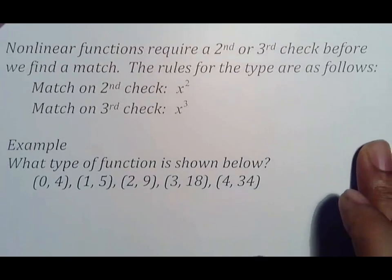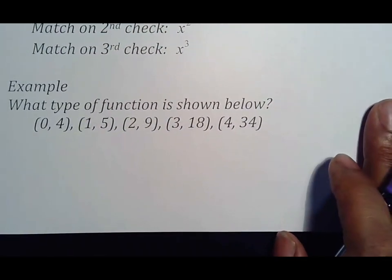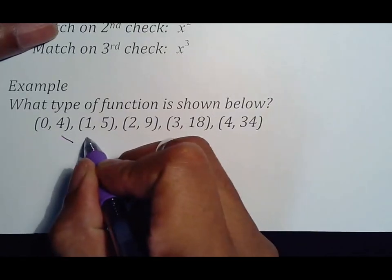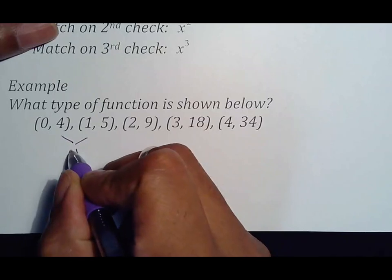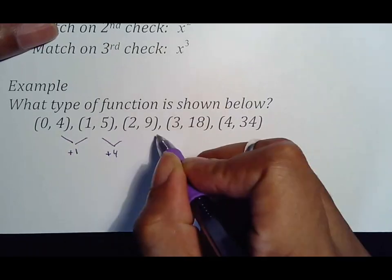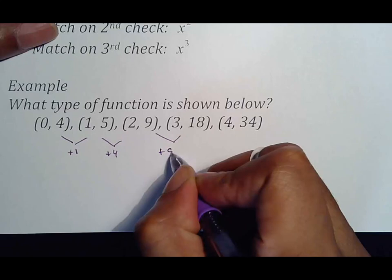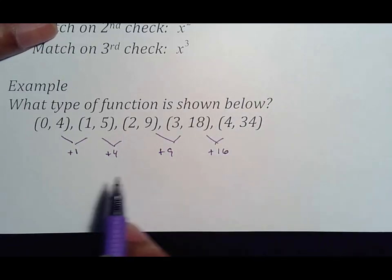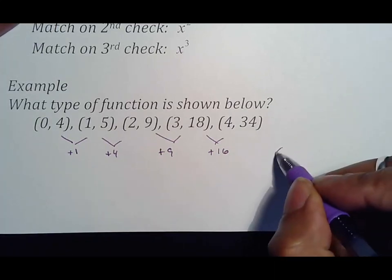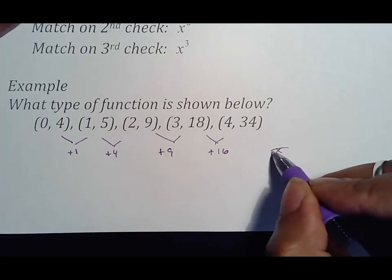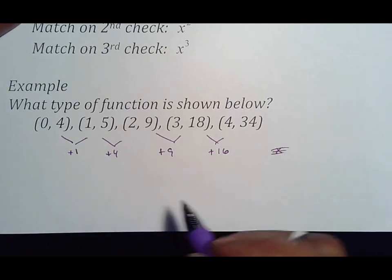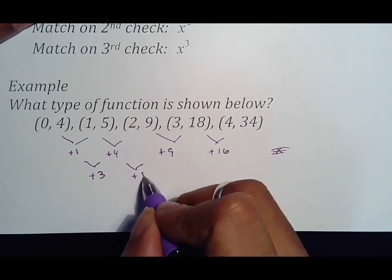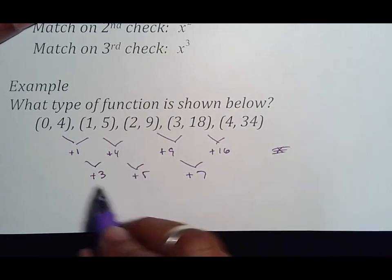So, if you want to know what type of function is shown below, pause yourself for a moment if you need to write these down. Here's how you check. You still do the same thing. Second minus first: five minus four is plus one. Nine minus five is plus four. Eighteen minus nine is plus nine. Thirty-four minus eighteen is plus sixteen. Notice how they don't match.